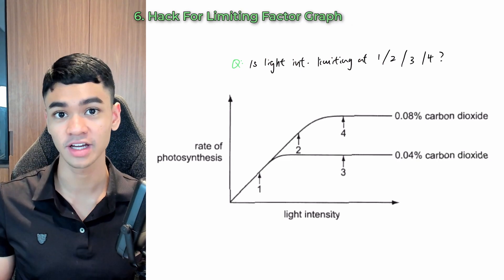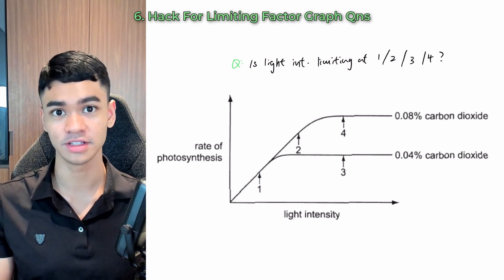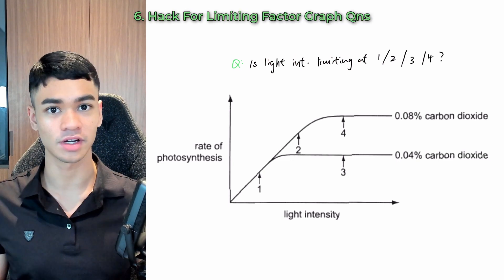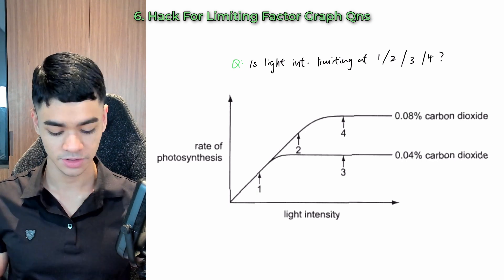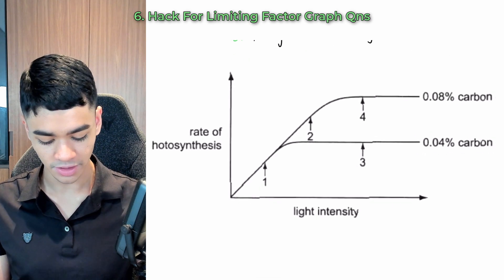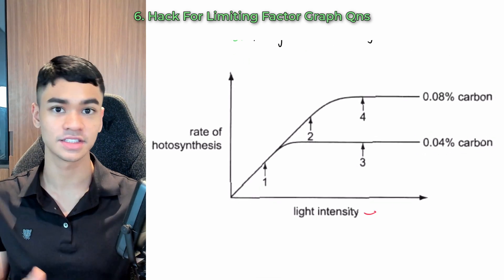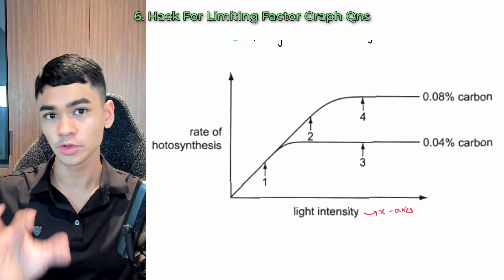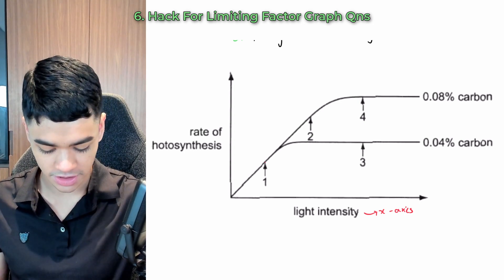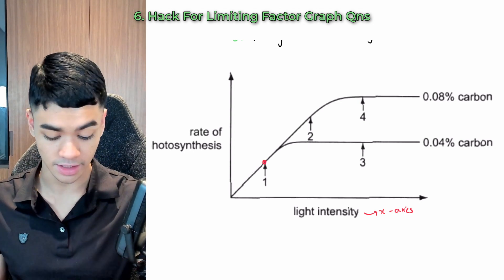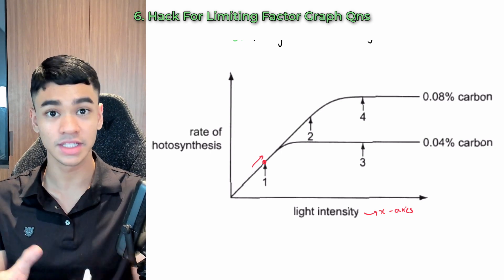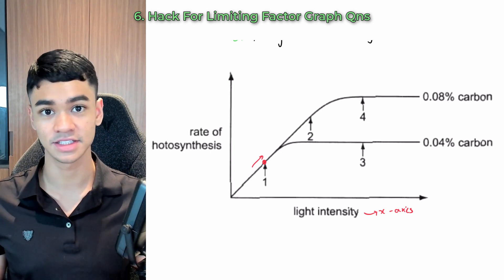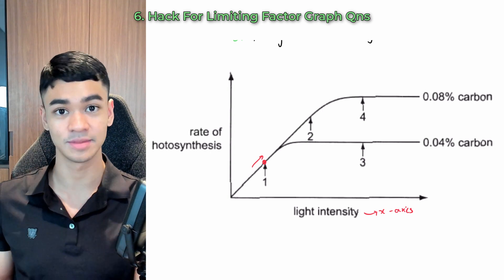Here's a super useful hack to doing these kinds of limiting factor questions. So you get this graph and they ask you, is light intensity limiting at points 1, 2, 3, 4? So here's how you use the hack. You look at the x-axis. And the x-axis in this case is light intensity. And so now you go to those points in the question and just ask yourself, is the gradient at that point positive? That means, is it going on an upward slope? If yes, then the x-axis factor is limiting.